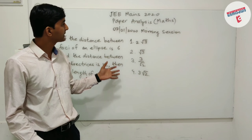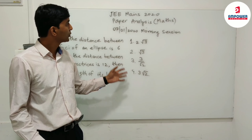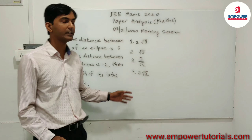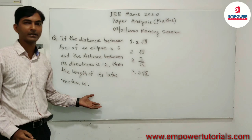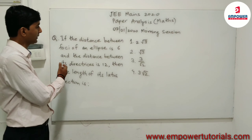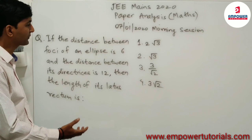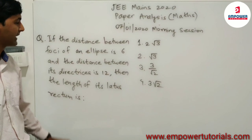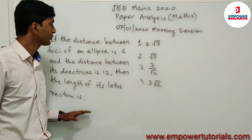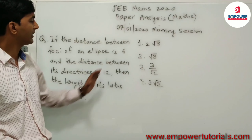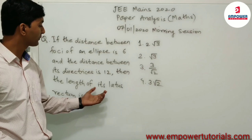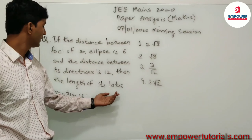We are going to discuss JMA's paper 2020 for Mathematics. The next question we are going to deal with is related to coordinate geometry, specifically on the chapter on ellipse. The question says: if the distance between the foci of an ellipse is 6 and the distance between the directrices is 12, then the length of its latus rectum is?